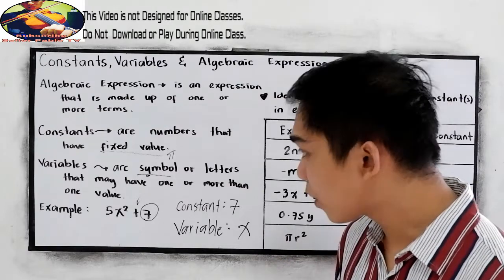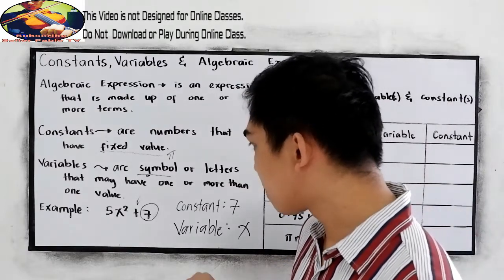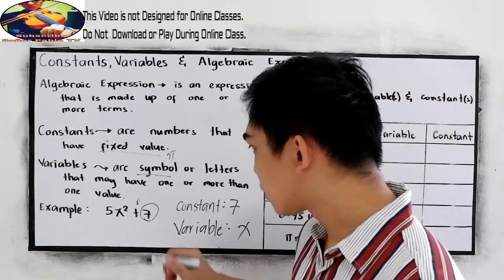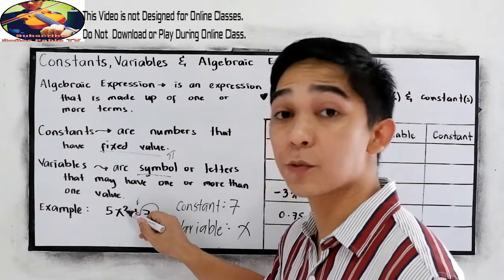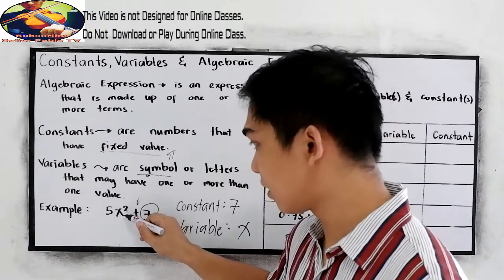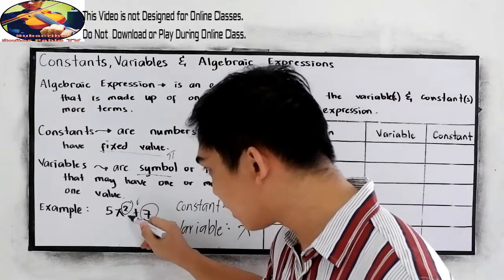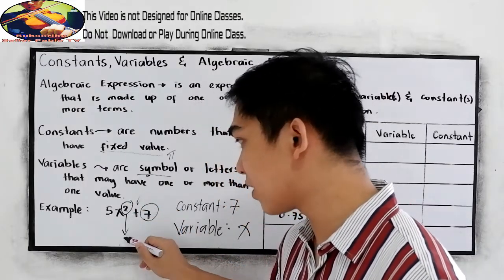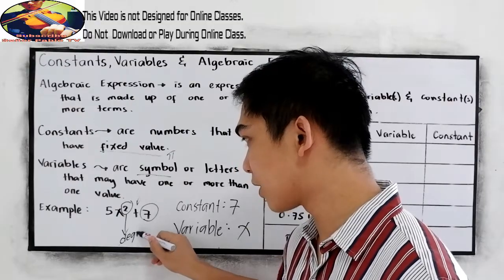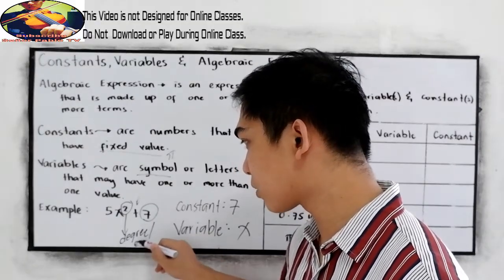Now, what are we going to do? So we have this exponent or degree. This is in degree 2 or the second degree. It's what we call the degree or exponent.